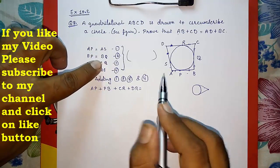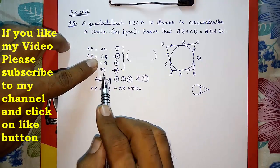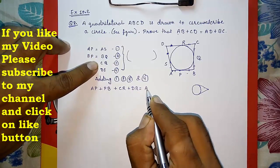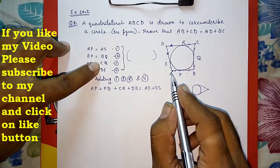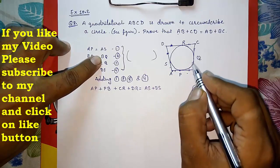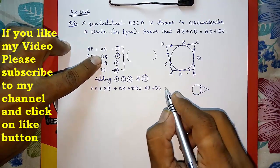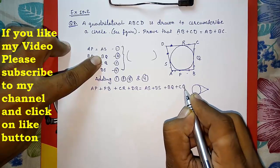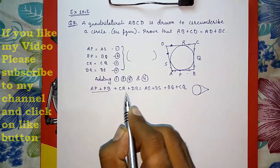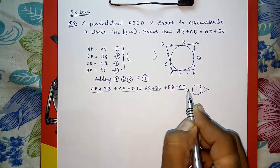Actually AS plus DS I will write. AS plus DS, because I want AD. And then BQ plus CQ. This is BQ and then CQ, so BQ plus CQ. Why I had written this - I'm adding these.